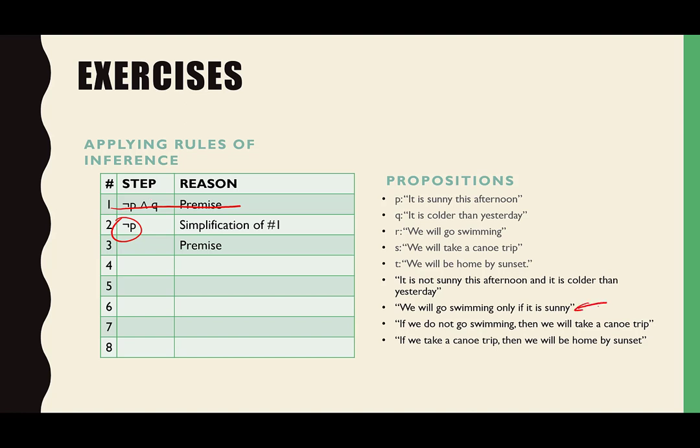His question was: does it matter that premise two doesn't specify 'this afternoon'? That's a good point — it probably should say 'this afternoon' specifically. But for sake of space, we'll note the observation. Premise two is saying 'we only go swimming if it is sunny' — and we're dealing with 'this afternoon' from the context established by premise one.